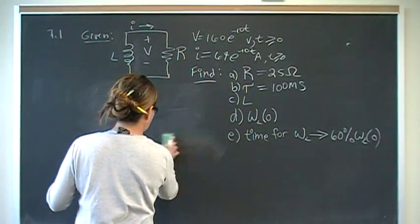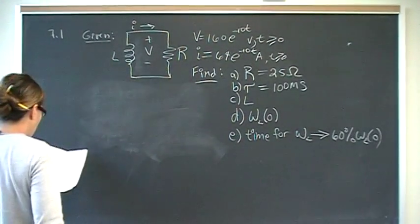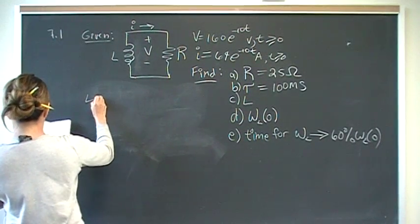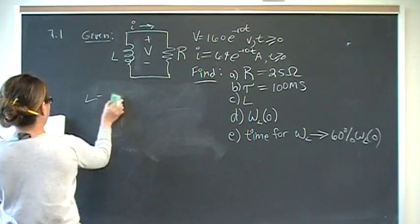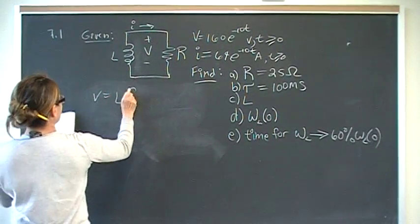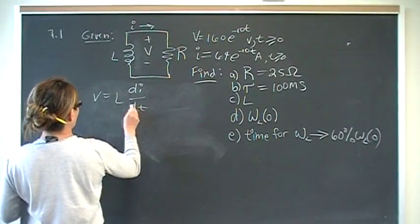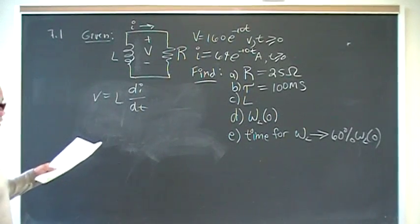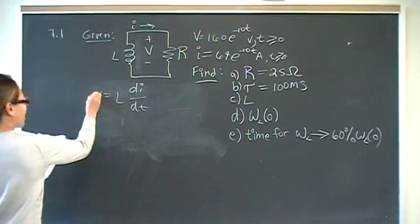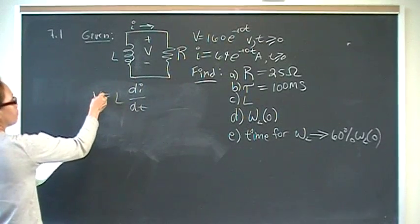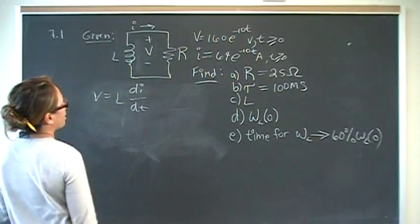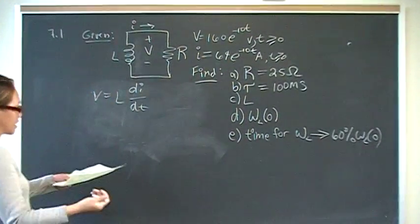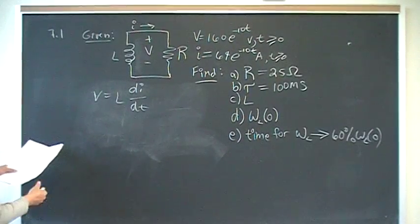And you can solve part C in two ways. You can use V is equal to L dI/dt. We know V, and we can differentiate I. And notice that once you take the voltage and you differentiate, the e's will cancel out and you'll just get some number, which will be the inductance. That's one way of doing it.